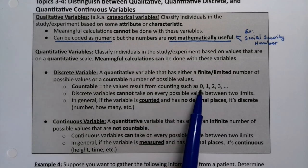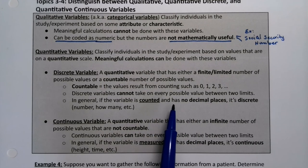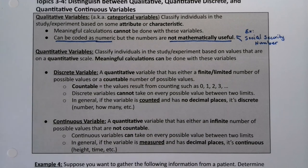Discrete is when it can be 1, 2, 3. You can count them. In general, it's counted with no decimal places.